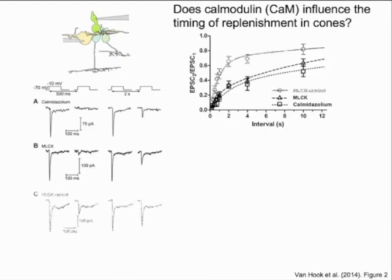When we used a control version of this peptide, the recovery in the paired pulse protocol resembled the time course we measured in control experiments. Together, these experiments indicated that calcium and calmodulin quickened the recovery from synaptic depression by enhancing the fast recovery mechanism.